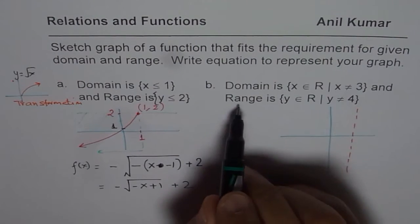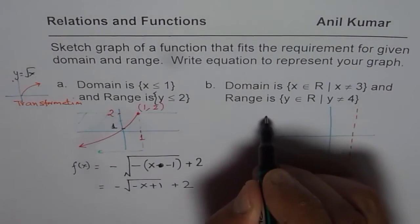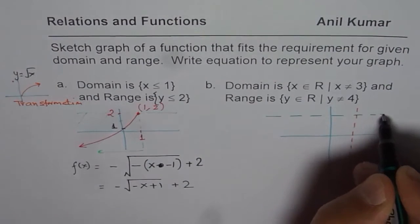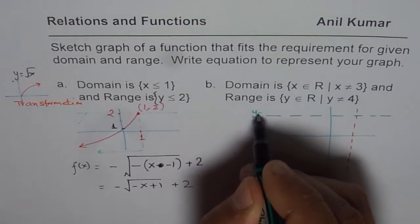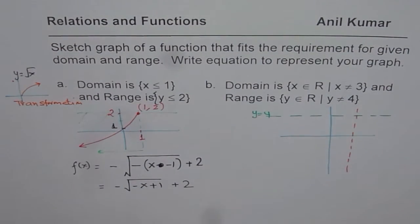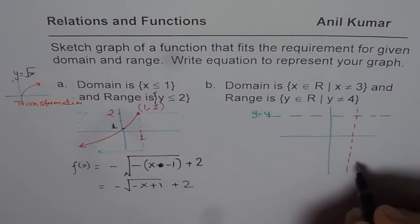And range is not equal to 4 means we have a horizontal asymptote y equals to 4 for the function. So we have a horizontal asymptote y equals to 4, vertical asymptote x equals to 3.